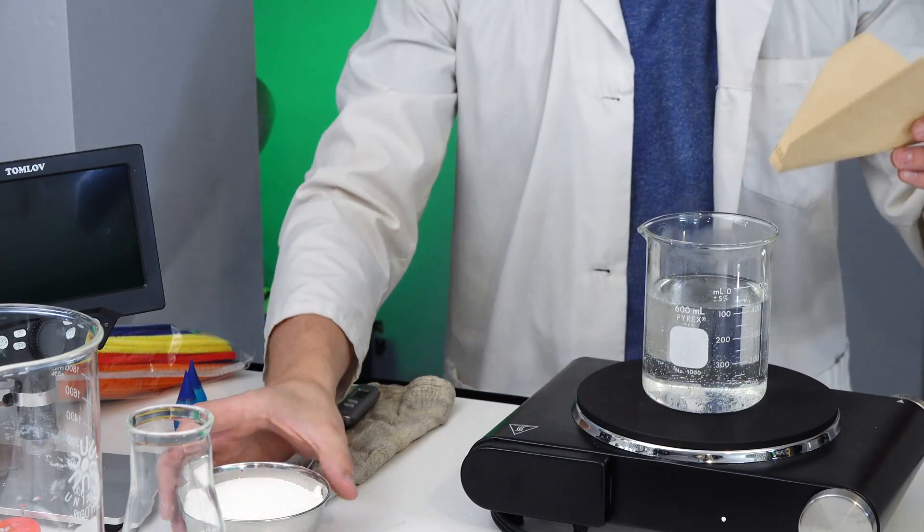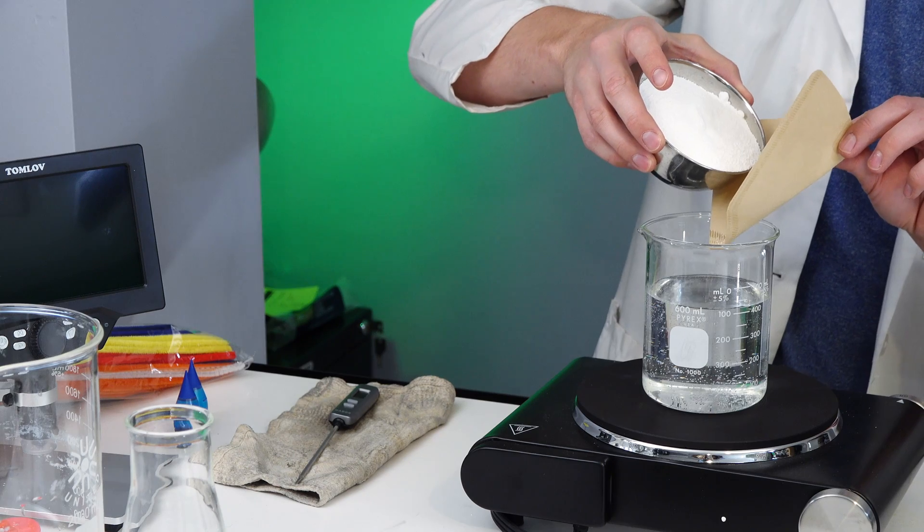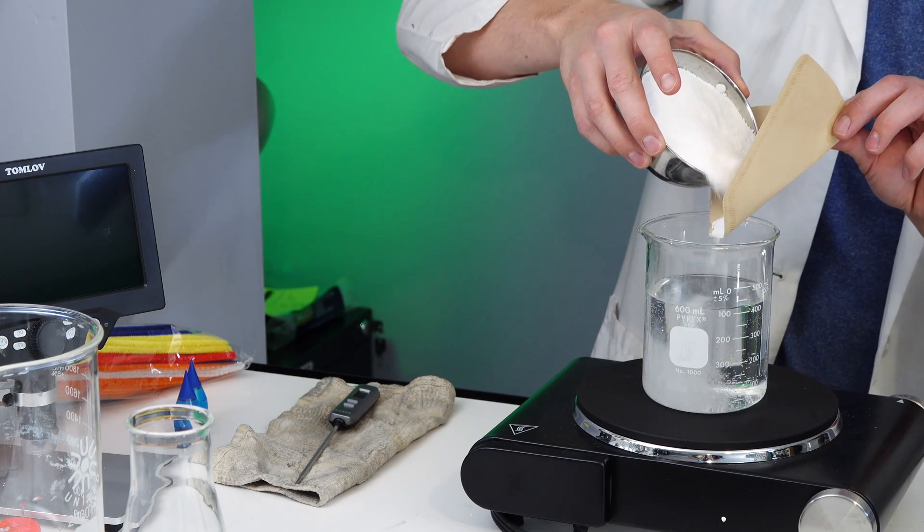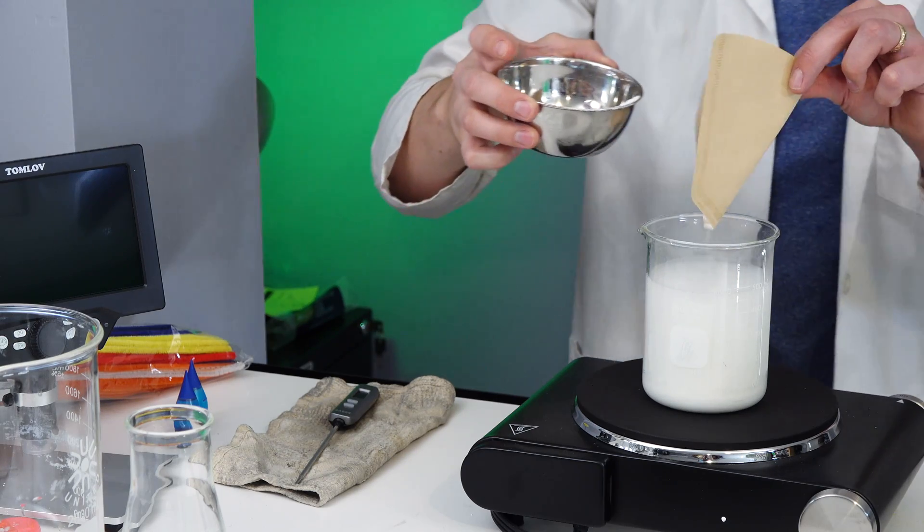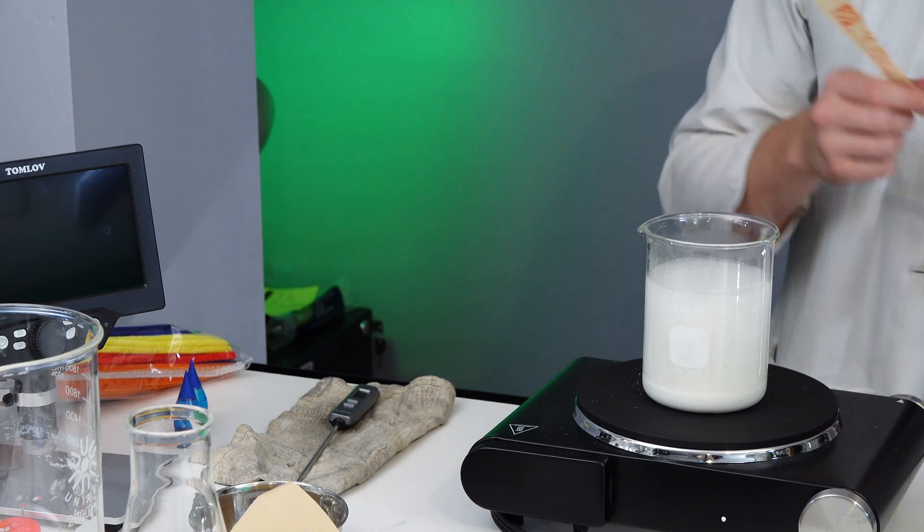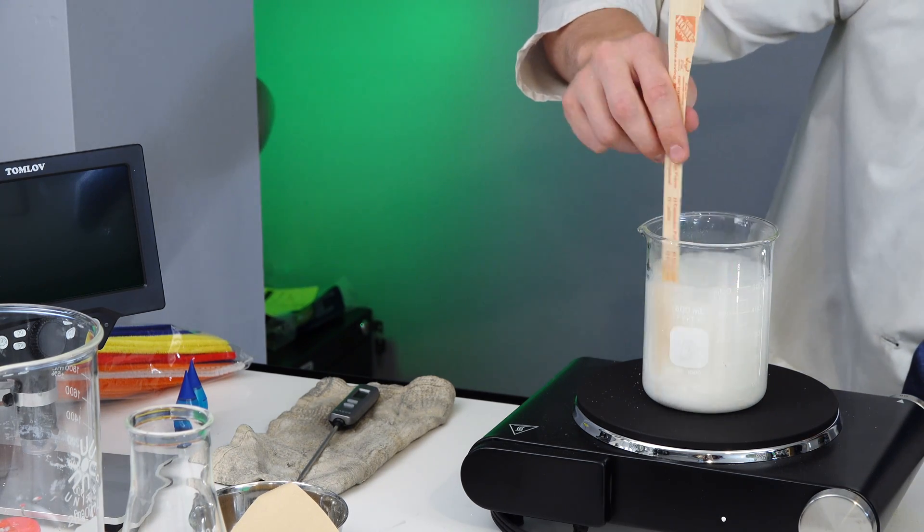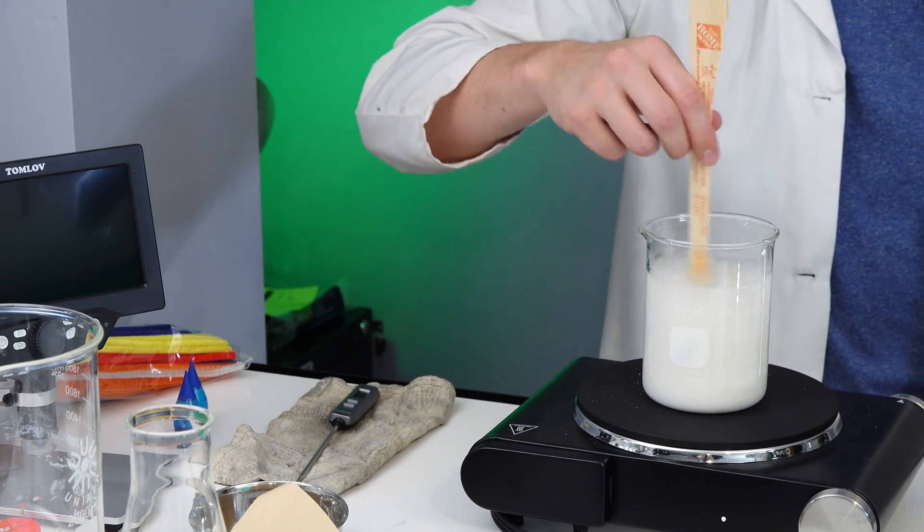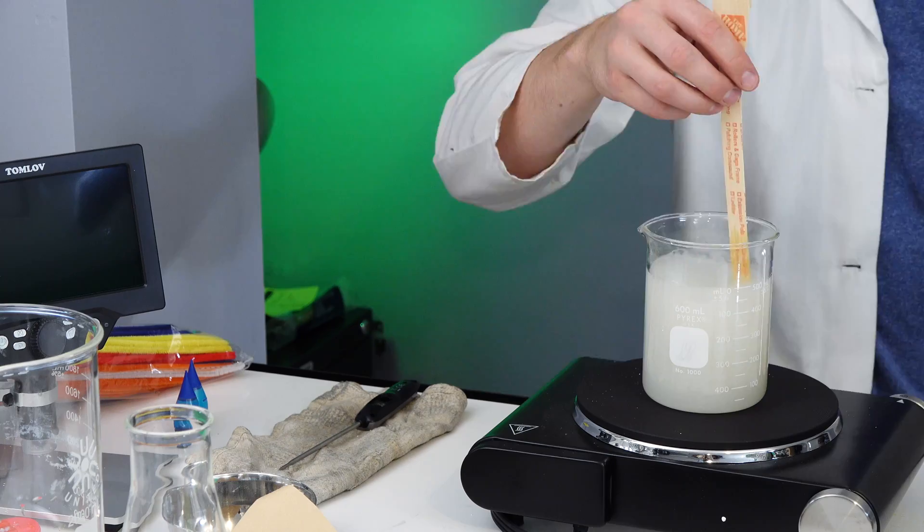So our water is getting pretty hot, so I'm going to add in some of my borax solution. So I'm just going to sprinkle that in there. Now you do not have to use a solubility graph in order to do this. In fact, all you really need to do is make sure that it is fully dissolved inside of solution.